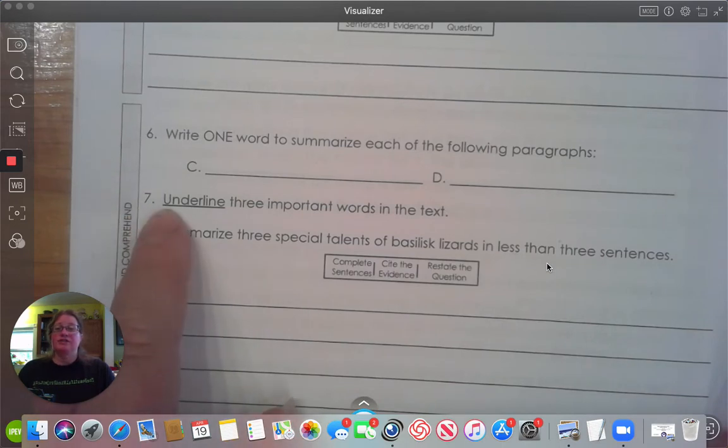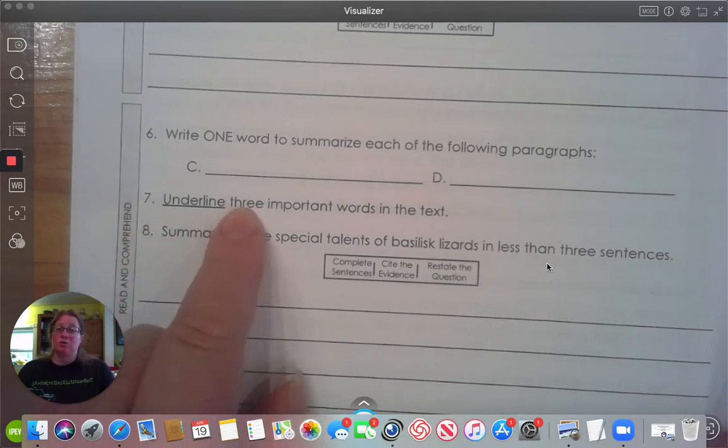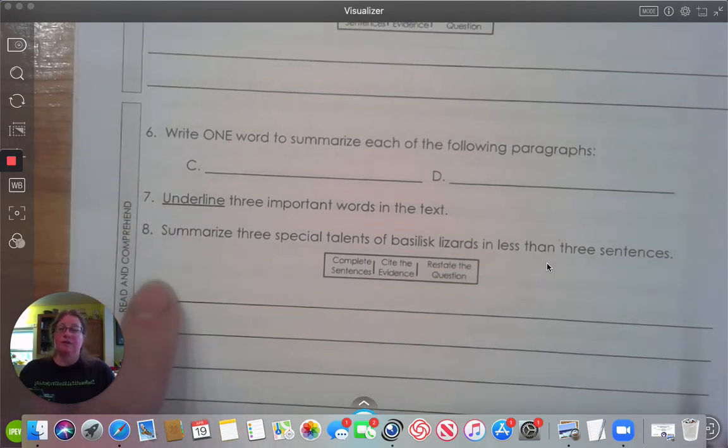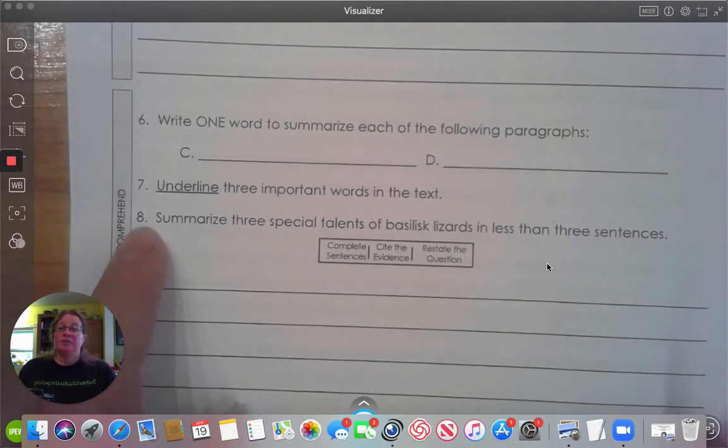For number seven, you find three important words in the text. These could be words you've already circled or underlined previously, but you're going to put the number seven next to it. Remember, you're only looking for three.